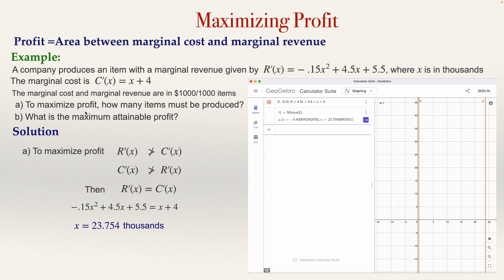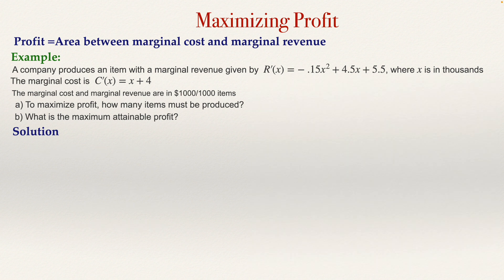Now, what is the maximum profit? It will be all the profit obtained from producing the first, second, third, and all units — the total profit. So it will be the area between the marginal cost and the marginal revenue. The formula is the integral from A to B of the difference of the two functions.